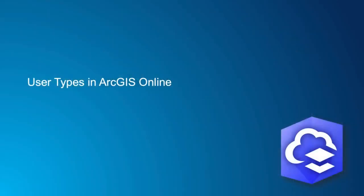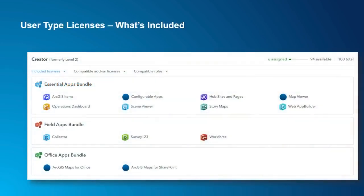Now let's take a look at how you'll see this in ArcGIS Online after the December update. User type descriptions are integrated into the software — they determine a member's basic apps and the scope of privileges that can be assigned to the member. In ArcGIS Online, you'll be able to see what apps are included in each user type. For example, here we see the apps included with the Creator user type: the Essentials App Bundle, the Field Apps Bundle, and the Office Bundle. Each of the other user types are clearly described in the software as well.